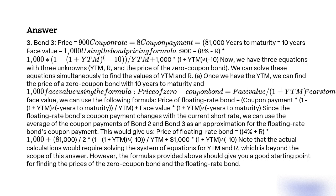To find the price of a floating-rate bond, coupon paid annually, with 10 years to maturity and $1,000 face value, we use: Price = Coupon Payment × (1 − (1 + YTM)^−Years to maturity) / YTM + Face Value × (1 + YTM)^−Years to maturity. Since the floating-rate bond's coupon changes with the current short rate, we use the average of the coupon payments of Bond 2 and Bond 3 as an approximation, giving: Price = [(4% + r) × $1,000 + (8% − r) × $1,000] / 2 × (1 − (1 + YTM)^−10) / YTM + $1,000 × (1 + YTM)^−10.